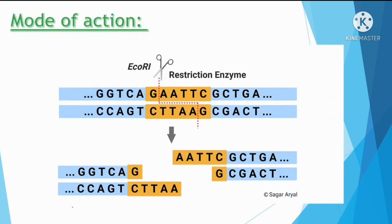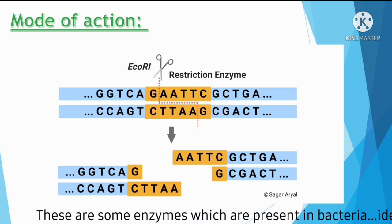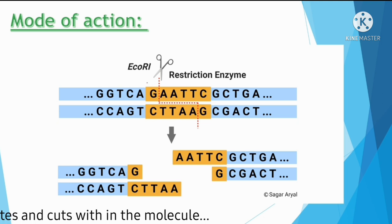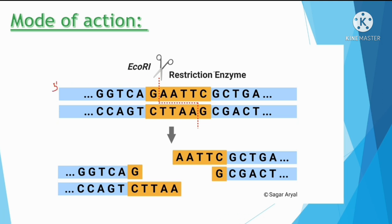Now for the mode of action. Restriction enzymes are enzymes that cleave DNA into fragments at specific restricted sequences. In double-stranded DNA, the enzyme recognizes a special sequence. For example, EcoRI recognizes the specific sequence GAATTC. This sequence is palindromic in nature — meaning it reads the same on both strands from 5' to 3'.